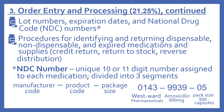A few more order entry and processing knowledge areas include lot numbers, expiration dates, and National Drug Code or NDC numbers. Also included are procedures for identifying and returning dispensable, non-dispensable, and expired medications and supplies — including credit return, return to stock, and reverse distribution. The NDC number is a unique 10 or 11 digit number assigned to each medication divided into three segments: the first is the manufacturer code, the middle is the product code, and the last is the package size. For example, 0143 is Westward Pharmaceuticals, 9939 is the product code for amoxicillin 500 milligrams, and 05 indicates a pack size of 500 capsules.